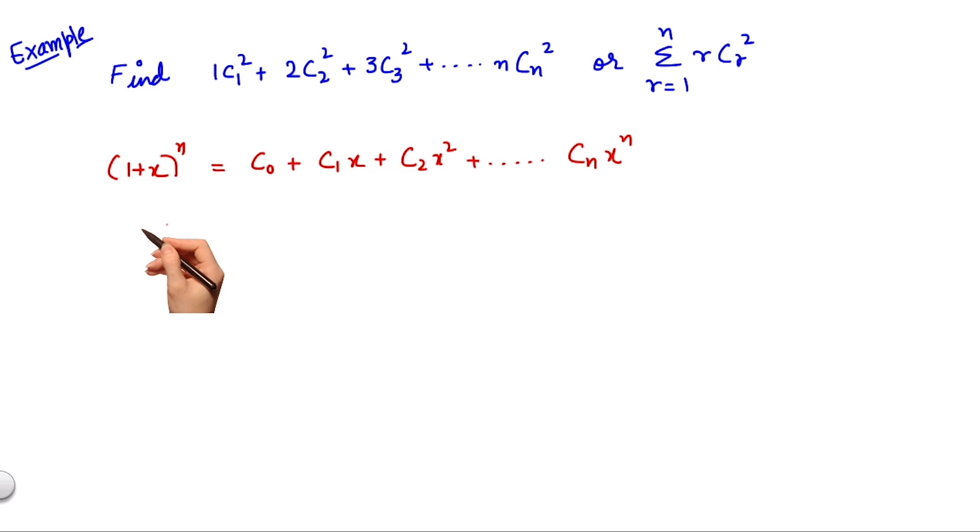Notice that we need rcᵣ. Hence we can differentiate both left-hand side and right-hand side with respect to x to get n(1+x)ⁿ⁻¹ equals c₁ + 2c₂x + 3c₃x² and so on.